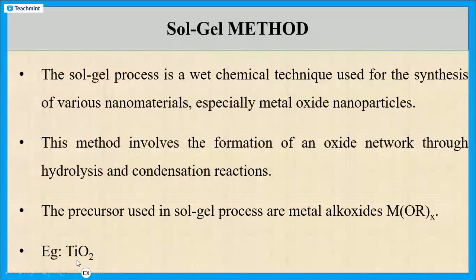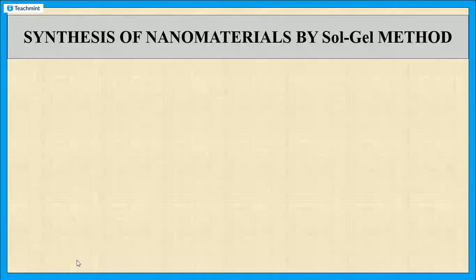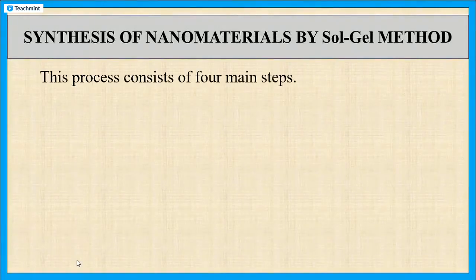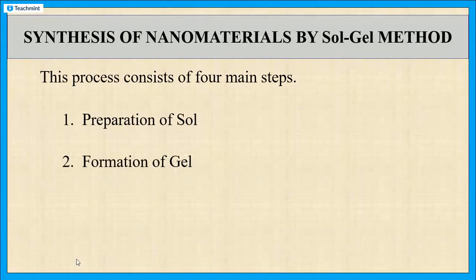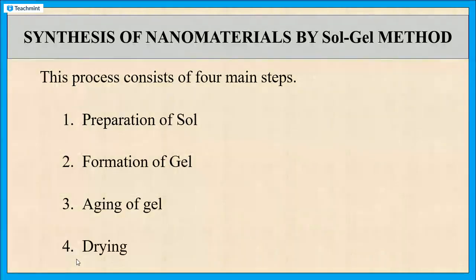Now let us see how to synthesize nanomaterials by using the Sol-gel method. This process generally involves the following steps: first is the preparation of Sol, second is the formation of gel, third is aging of gel, and the last step is drying. Now let us see all these steps one by one.